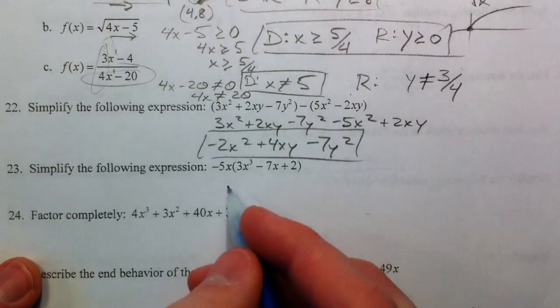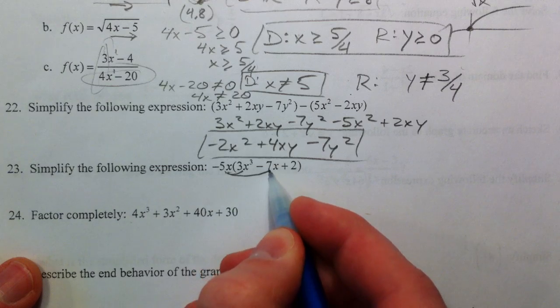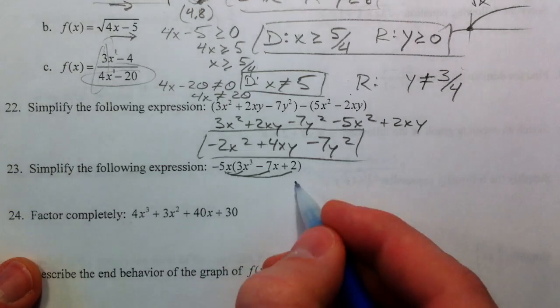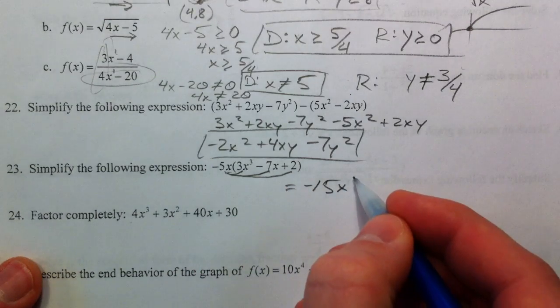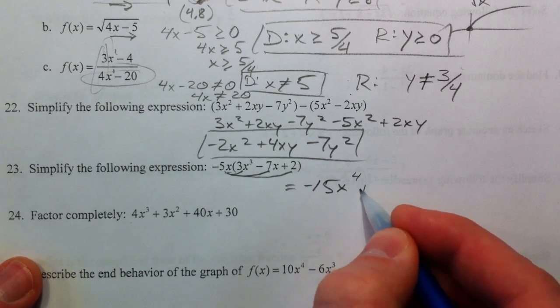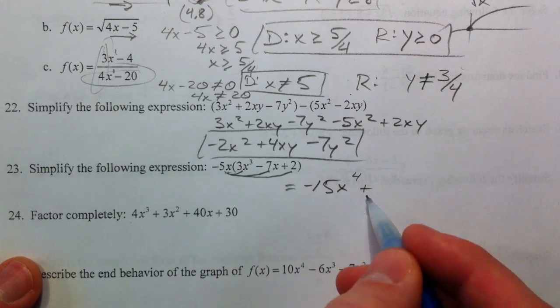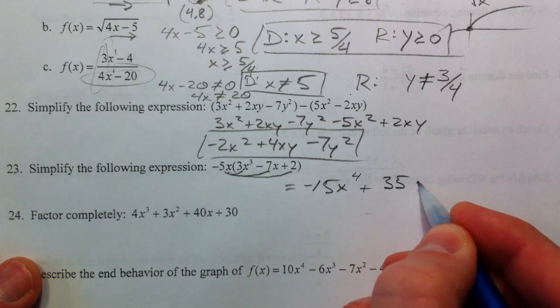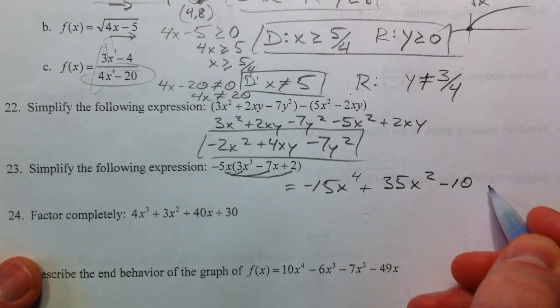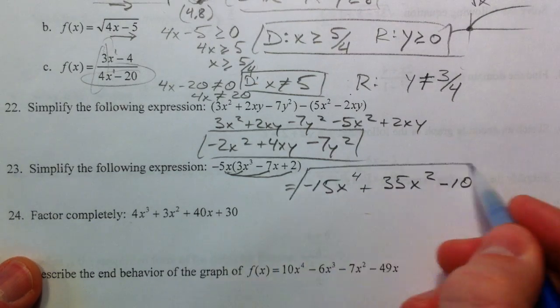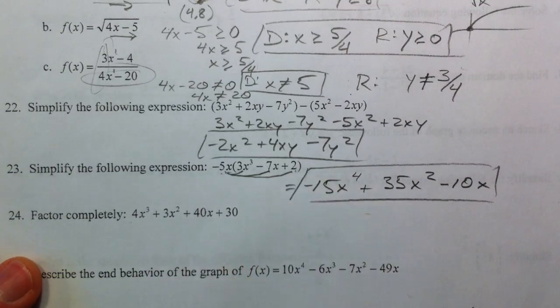23, simple as distributing the 5x through. We're multiplying. So negative 15, and then x times x cubed is x to the fourth, plus negative 5 times negative 7 is a positive 35x squared, minus 10x, negative 5x times 2.